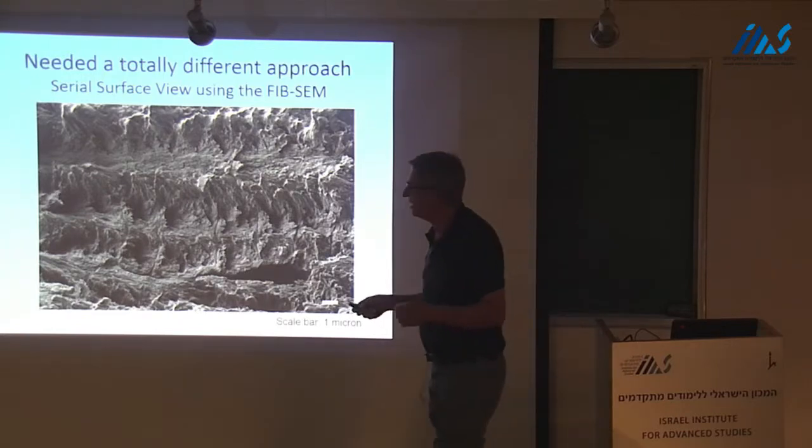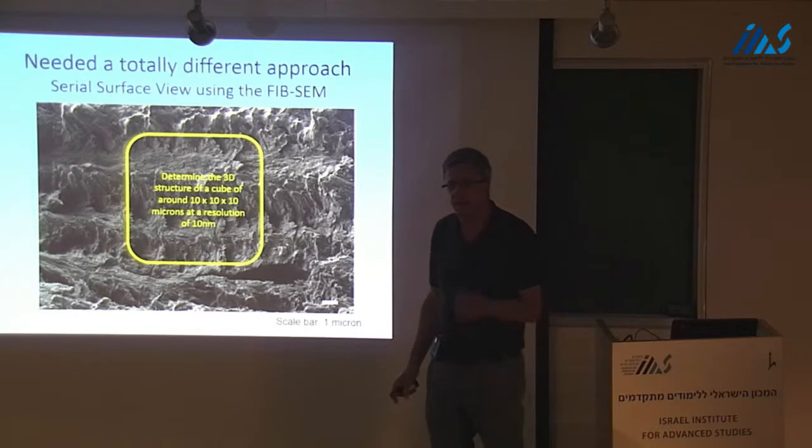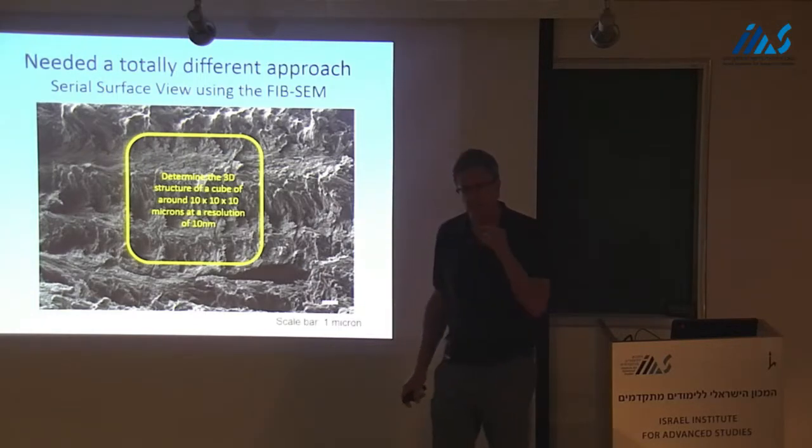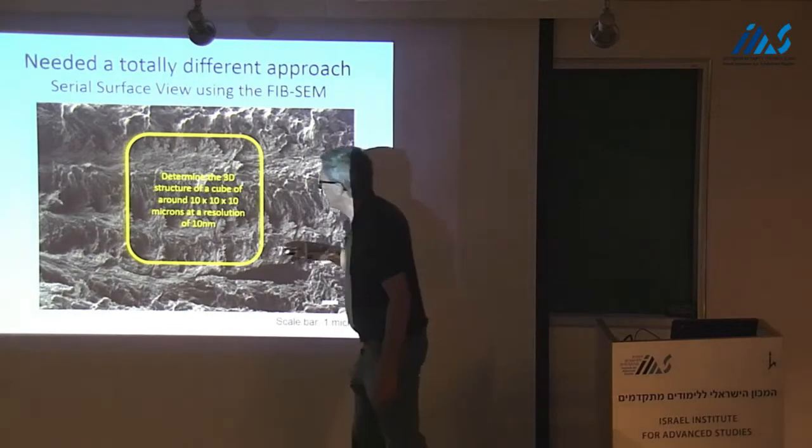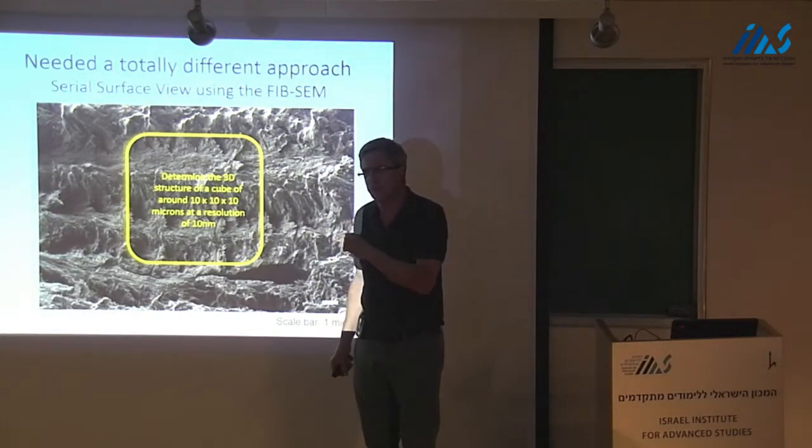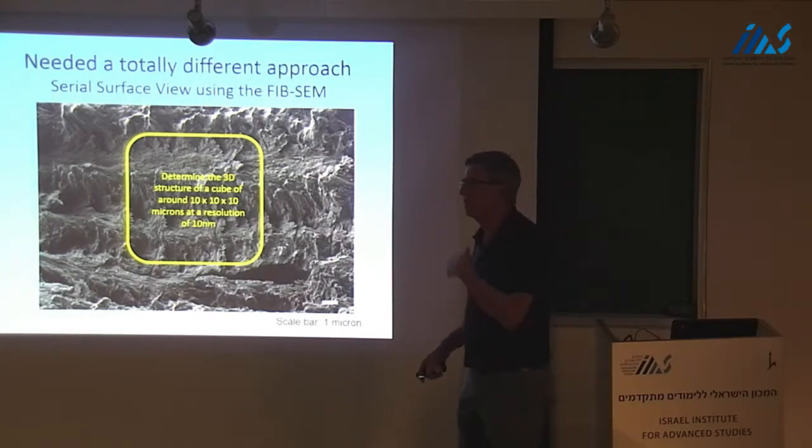Basically, what we are able to do is to take a volume, about 10 by 10 microns, and slice it like you're slicing bread into slices 10 nanometers thick. That's the resolution. We set the magnification so that we have a magnification in each of our images of 10 nanometers, and in the z direction, it's also 10 nanometers. We need about 1,000 images to fill a volume of 10 by 10 by 10 microns.